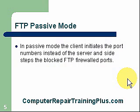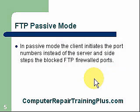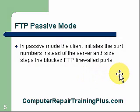Next, the FTP passive mode. In the passive mode, the client — not the server — initiates the port numbers instead of the server side, and this sidesteps the blocked FTP firewall ports. This allows us to get around port 20 and 21 if they're blocked or filtered by our server.